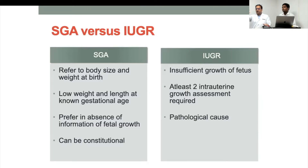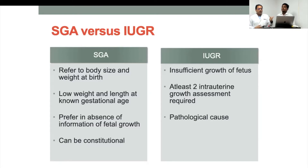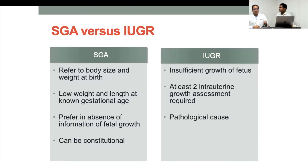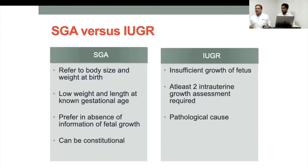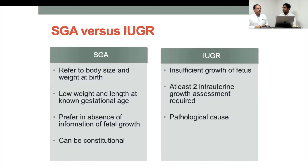Growth failure is defined as someone who is very short, not growing, or crossing two or more percentile lines between two years and puberty. IUGR can apply even when birth weight is normal if percentile lines are crossed. Ultrasound recordings of growth and birth length should be included in neonatal discharge summaries, as they give a better picture of fetal growth than birth weight alone. The term SGA is used because it is easier to identify without longitudinal assessment.